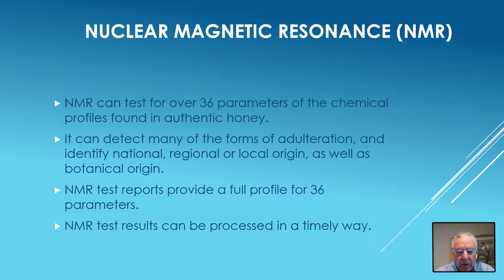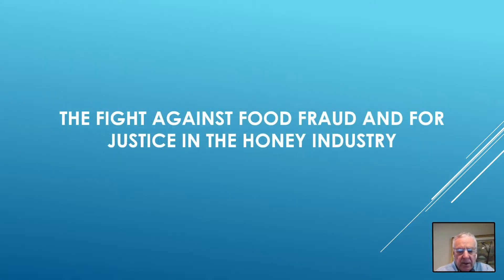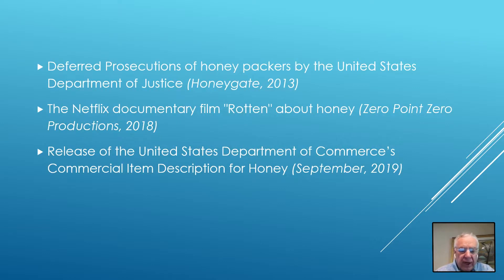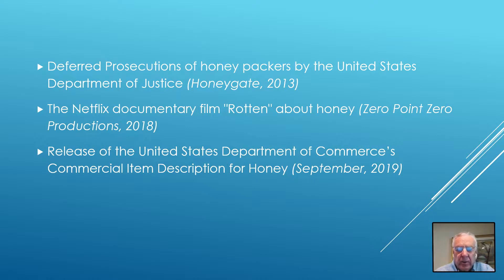The NMR can test for over 36 parameters of the chemical profiles found in authentic honey. It can detect numerous issues, including geographic and local origin as well as botanical origin. The struggle against food fraud has led to a wide range of countermeasures, including deferred prosecution for honey circumvention involving 30 countries — honey that was being circumvented to avoid anti-dumping duties and was also adulterated, using modes of production inconsistent with honey authenticity.